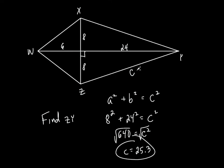Does it make sense that it's 25.3? Yes, it does, because the hypotenuse has to be the longest side. If it came out shorter than 24, you'd know you did something wrong because the hypotenuse has to be bigger than either of the other two sides.